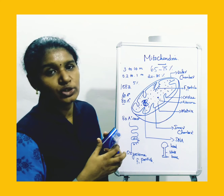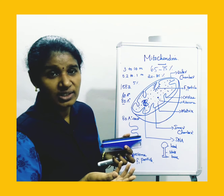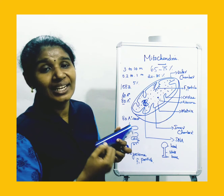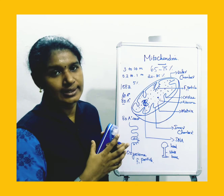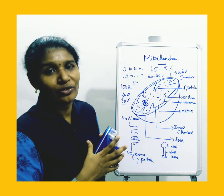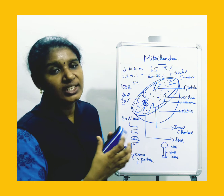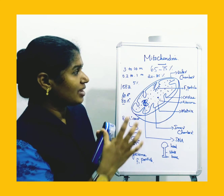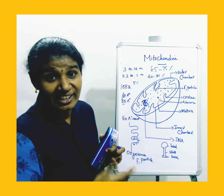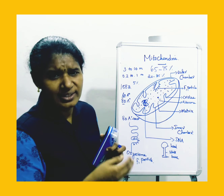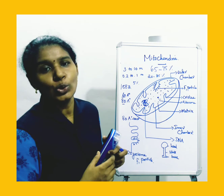The major functions of mitochondria are: providing cellular respiration, protein synthesis, and acting as the powerhouse of the cell. It also regulates the metabolic activity of the cell, including the Krebs cycle, electron transport chain, and thermogenesis.